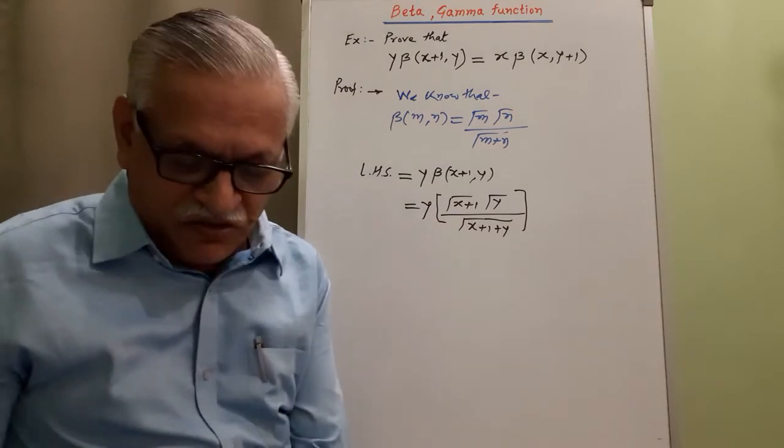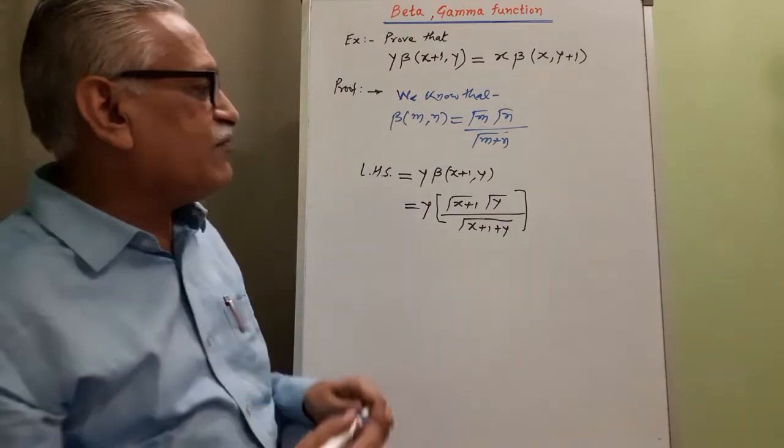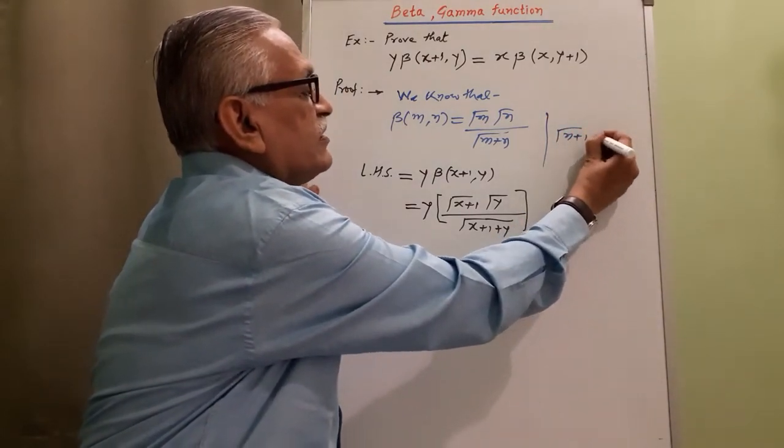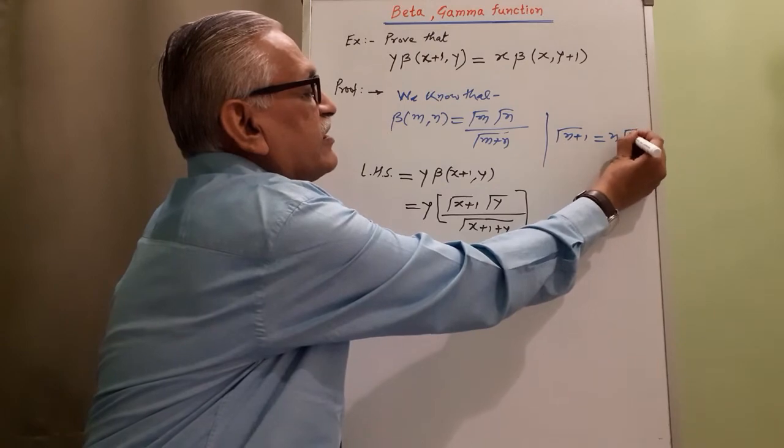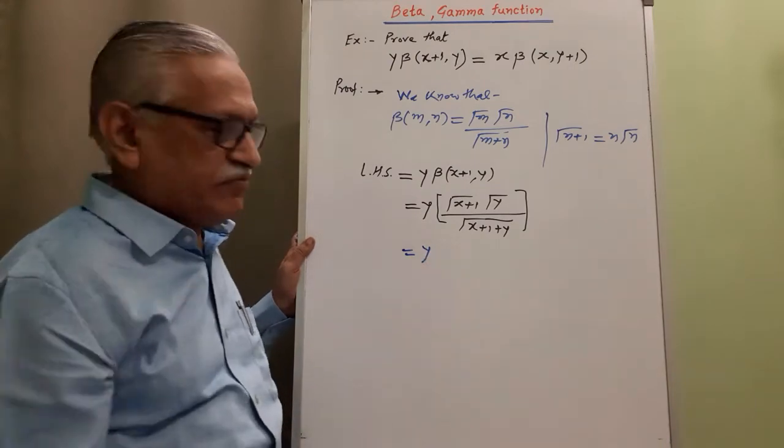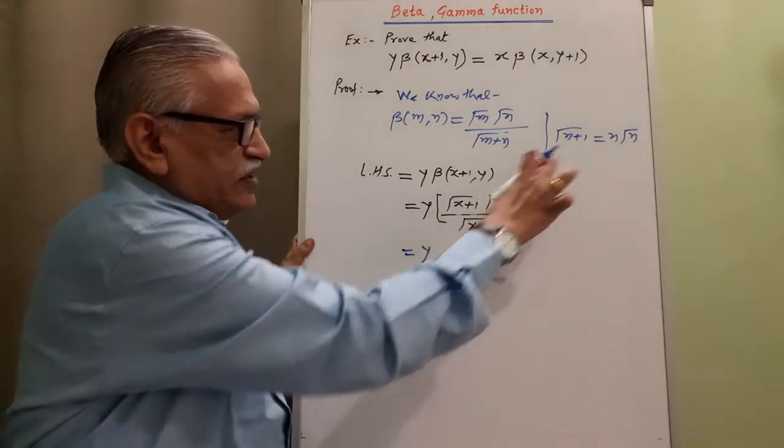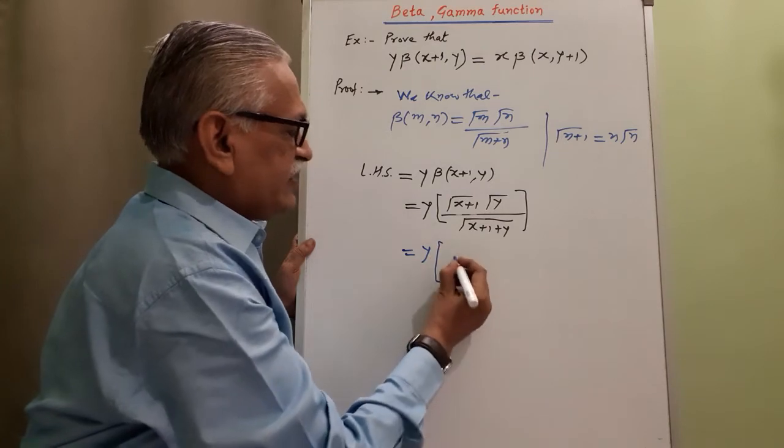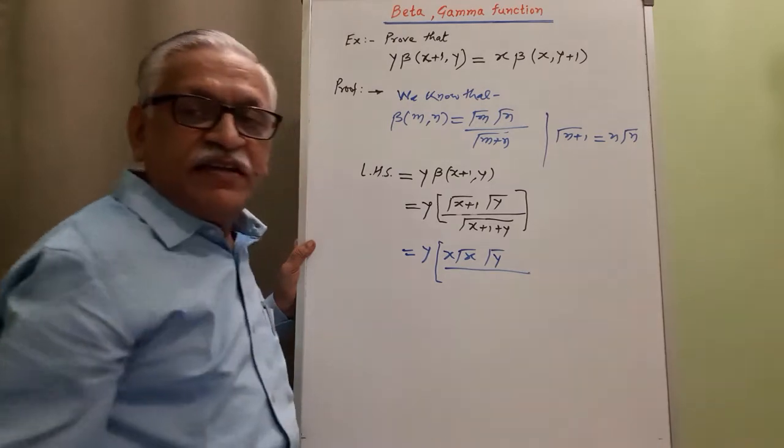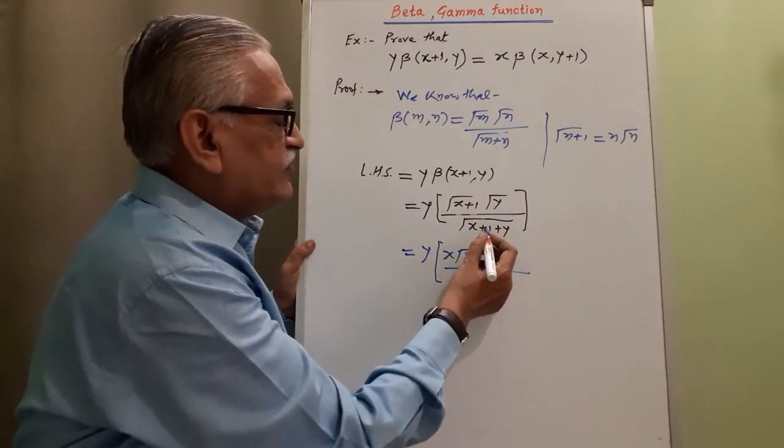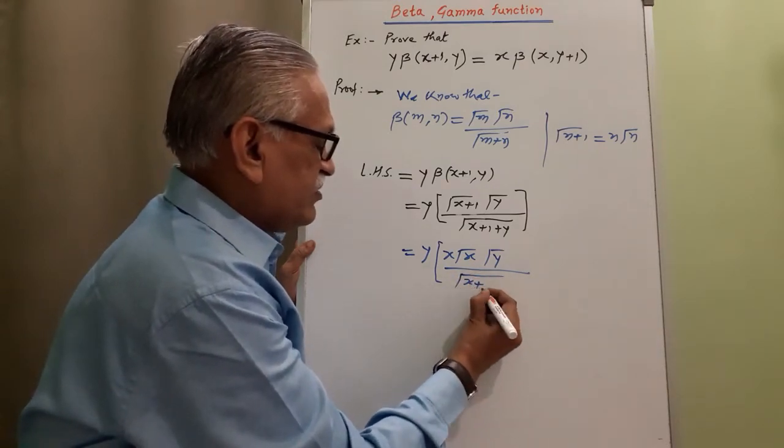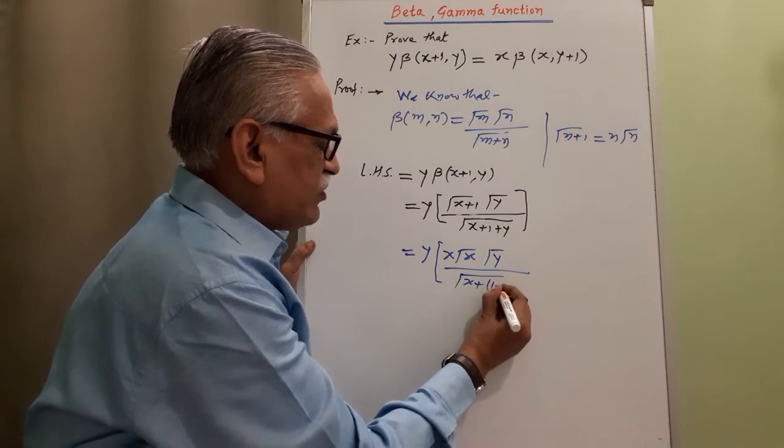And then, to simplify it further, we take the help of the property of gamma function. We know that gamma N plus 1 is N gamma N, taking the help of this property. And therefore, I can rewrite this as Y as it is. Gamma N plus 1 is N gamma N, as per that, it is X gamma X divided by this. We take X plus 1 plus Y.